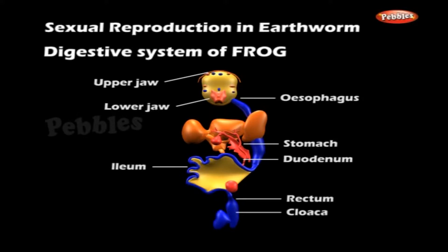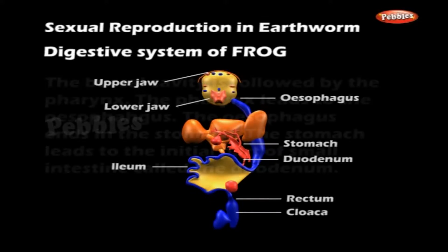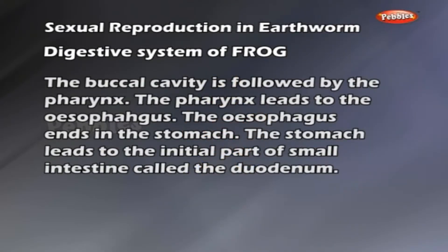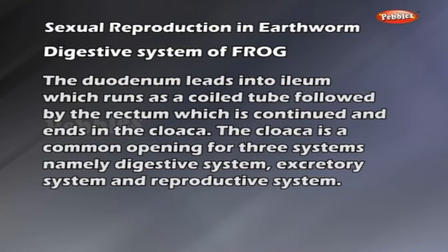The buccal cavity is followed by the pharynx, which leads to the esophagus. The esophagus ends in the stomach, which leads to the duodenum, then to the ileum — a coiled tube — followed by the rectum, which ends in the cloaca. The cloaca is a common opening for three systems: the digestive system, excretory system and reproductive system.